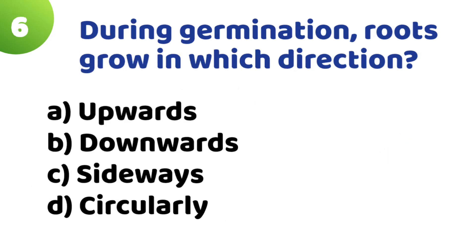Question 6: During germination, in which direction does the root grow? Option A: Upwards. Option B: Downwards. Option C: Sideways. Option D: Circularly. The correct answer is Option B — Downwards.